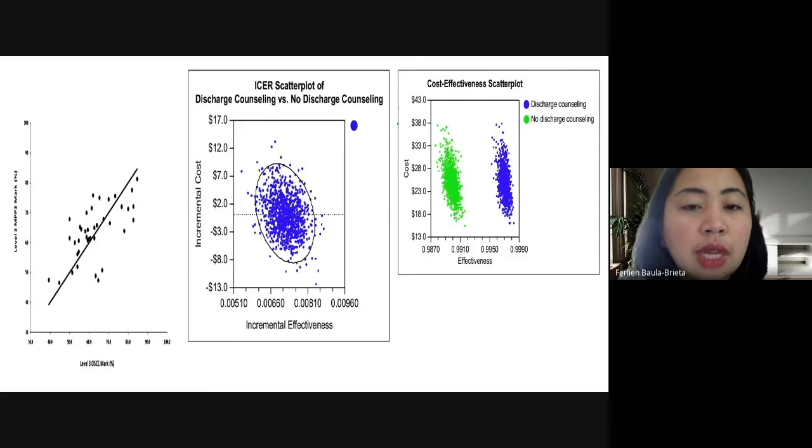So scatter plots are used to observe relationship between variables. So if we see that that is appropriate to your type of data, then you can use scatter plot. Then we have another one here for pharmacy, discharge counseling versus no discharge counseling.